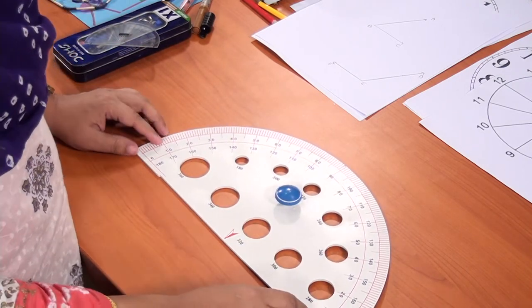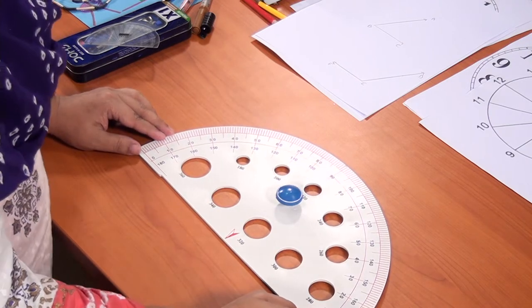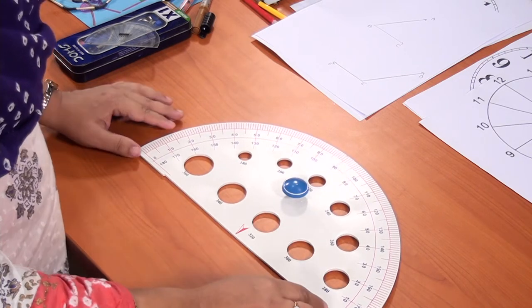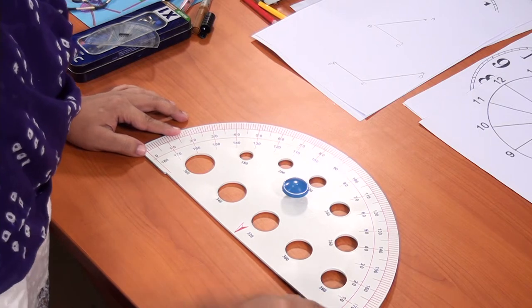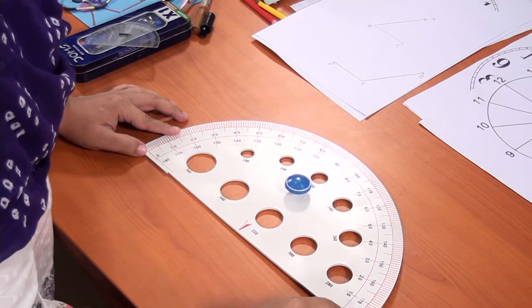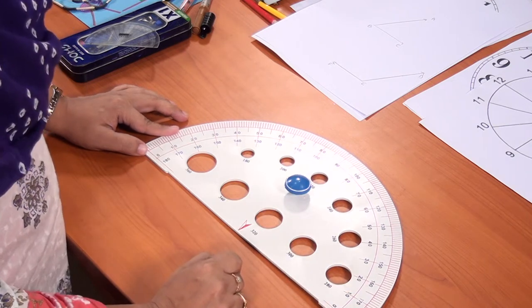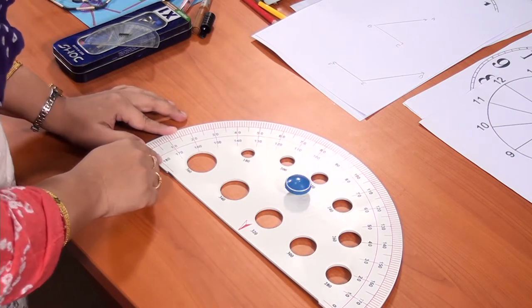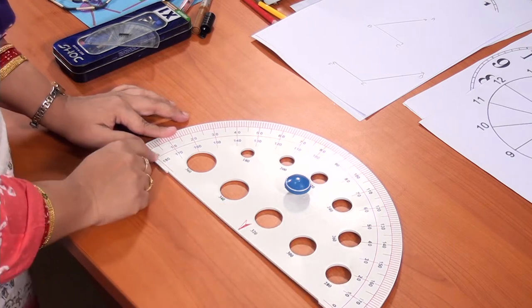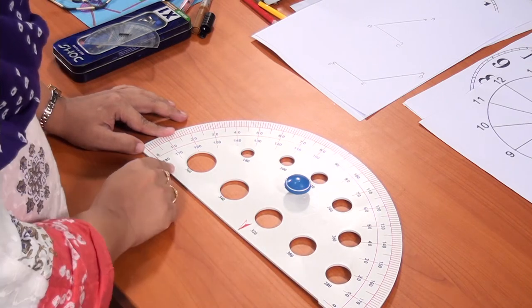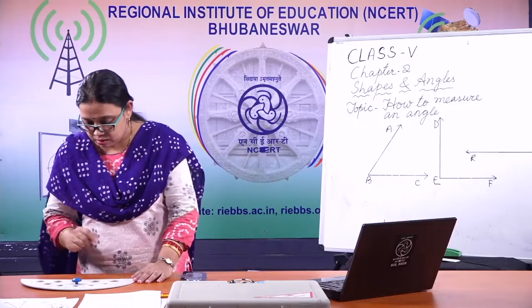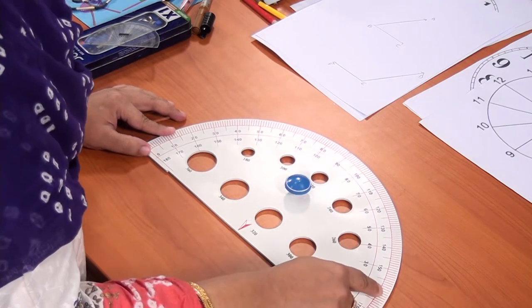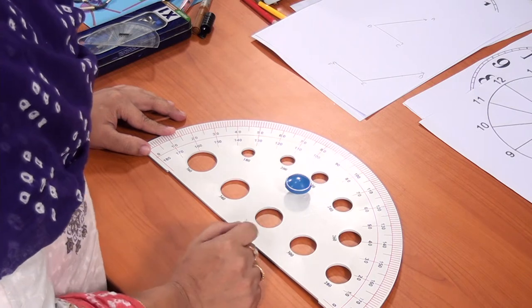Look at the protractor carefully. The whole circle represents 360 degrees, and this half of the circle represents 180 degrees. From 0 to 10 there are 10 divisions, so each red line represents 1 degree. The scale goes 0, 10, 20, 30, 40, up to 180, which represents a straight angle. You can find two scales here — one is called the inner scale and the other is called the outer scale. I will explain why two scales are given.